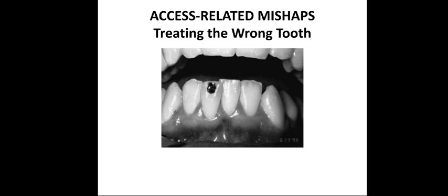The first and a common mistake in endodontic treatment is treating the wrong tooth. Sometimes careless diagnosis and careless management of the case, including not isolating the accused tooth with a rubber dam, leads to this error. One of the benefits of rubber dam is to isolate and clarify the tooth for treatment. As a result, pain will persist and endodontic treatment will fail to relieve the patient's symptoms.